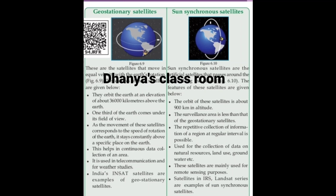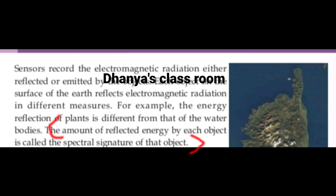The next topic is spectral signature. The amount of reflected energy by each object is called the spectral signature of that object. This is one of the most important concepts in remote sensing.